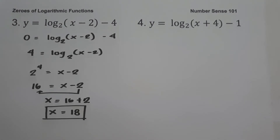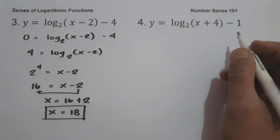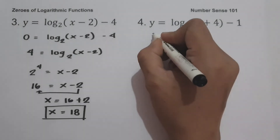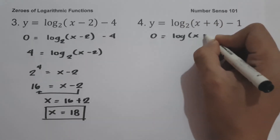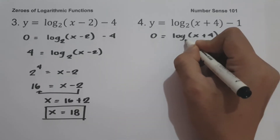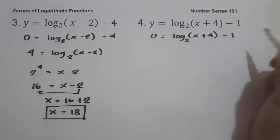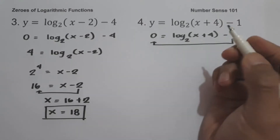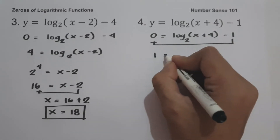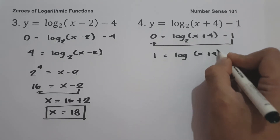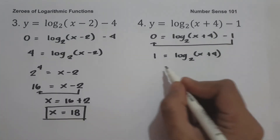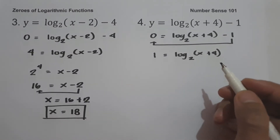On example number four: y equals log base 2 of (x + 4) minus 1. To find the zero, let us equate the function equal to zero. We have zero equals log base 2 of (x + 4) minus 1. Moving negative 1 to the other side gives us 1 equals log base 2 of (x + 4).